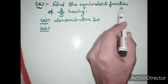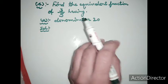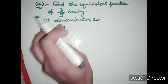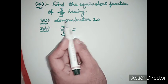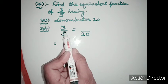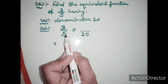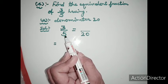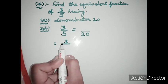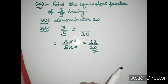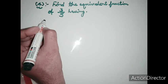Question 4: find the equivalent fraction of 3 upon 5 having denominator 20. We write 3 upon 5 and look for the multiplier that turns 5 into 20. Five times 4 is 20, so we multiply both numerator and denominator by 4. Three times 4 is 12, and 5 times 4 is 20. The equivalent fraction of 3 upon 5 with denominator 20 is 12 upon 20.